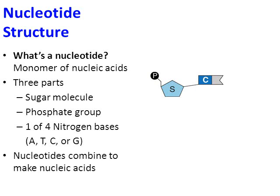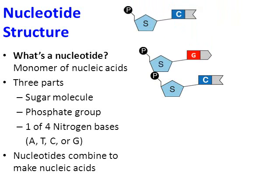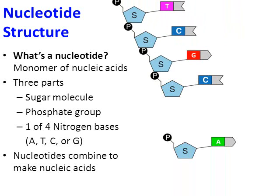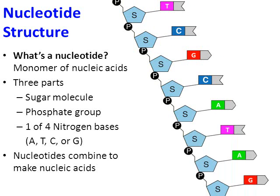Nucleotides combine to make larger polymers. Remember, the polymer is called a nucleic acid. So one nucleotide will bond with a wide variety of others to make a larger nucleic acid.